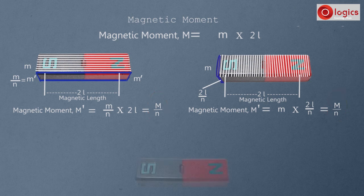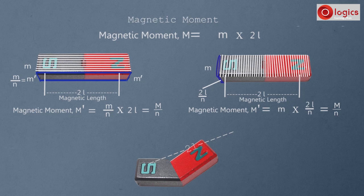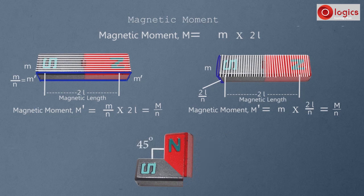When a magnet is bent, the pole strength remains the same, but the magnetic length decreases due to the bend. If the bend is 45 degrees, then the magnetic moment M' equals M divided by the square root of 2.